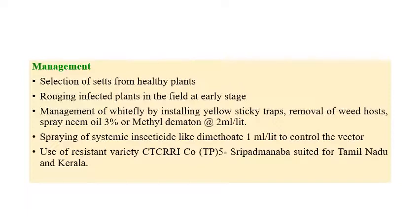For management, select healthy plant sets from disease-free areas. Rogue out infected plants at earlier stages. To control the insect vector, spray neem oil at three percent or methyldemeton at two ml per liter of water. Removal of weeds from nearby areas and spraying of systemic insecticide like Dimethoate at one ml per liter of water can also control the disease.